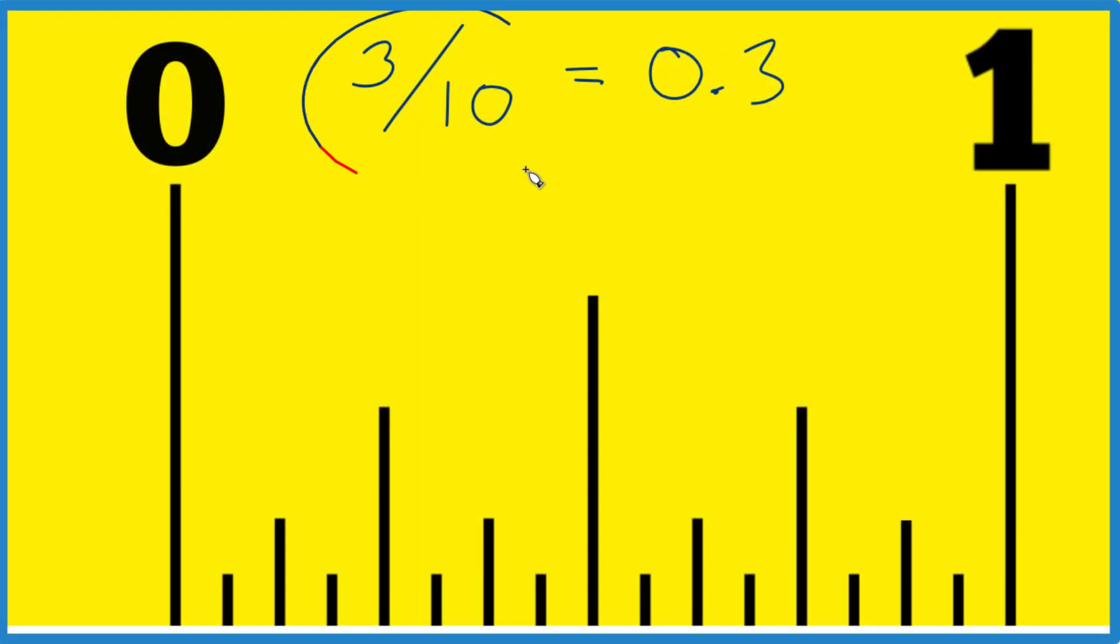So we're going to figure out how to find 3 tenths of an inch on a ruler or a tape measure. And we're talking about the traditional tape measure where we have these fractional divisions here showing us 1 16th and so on of inches.